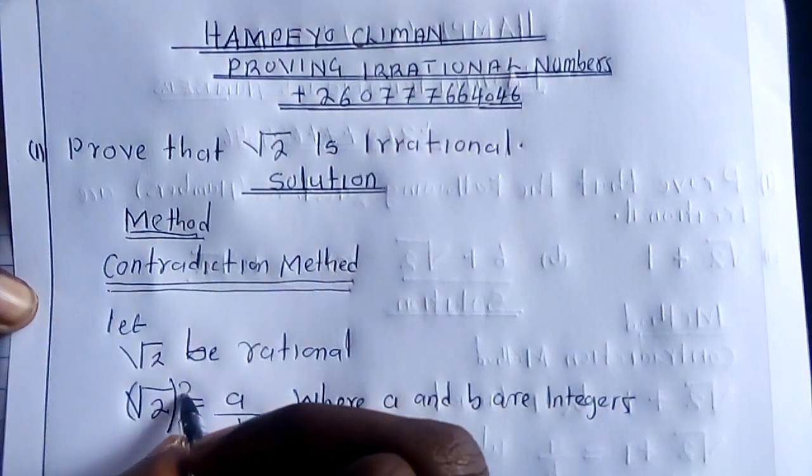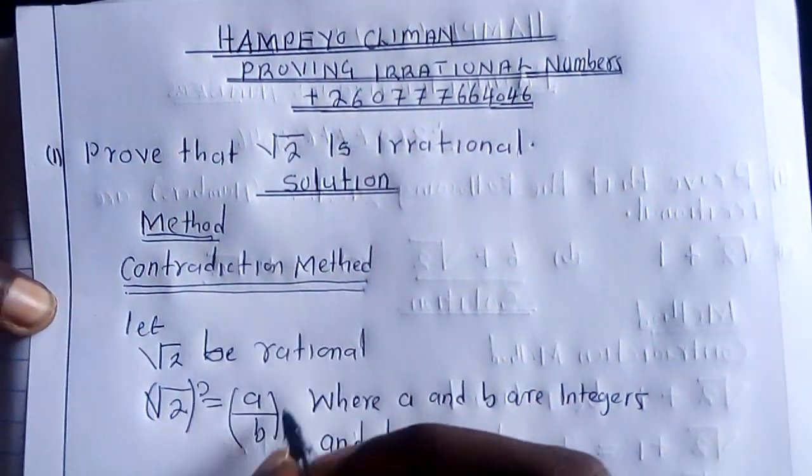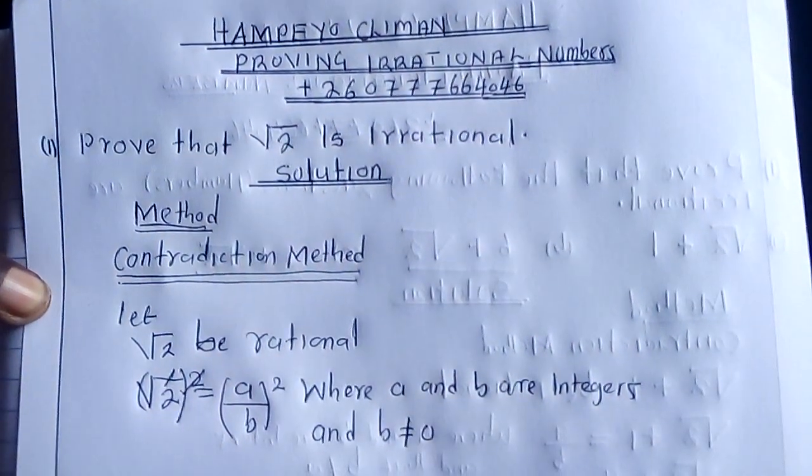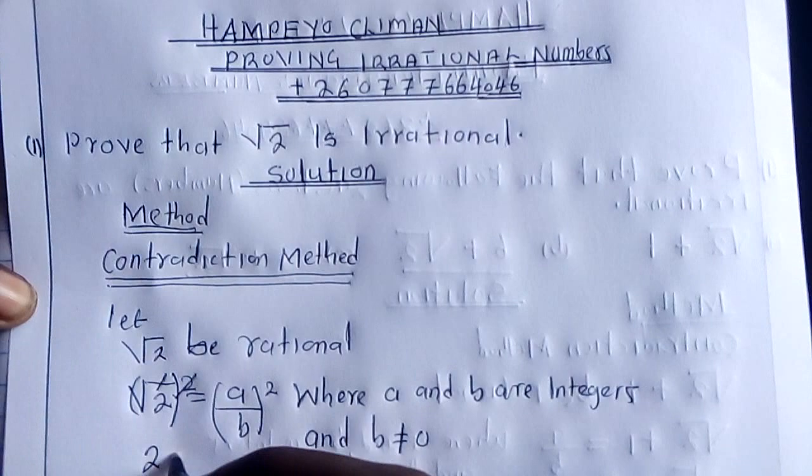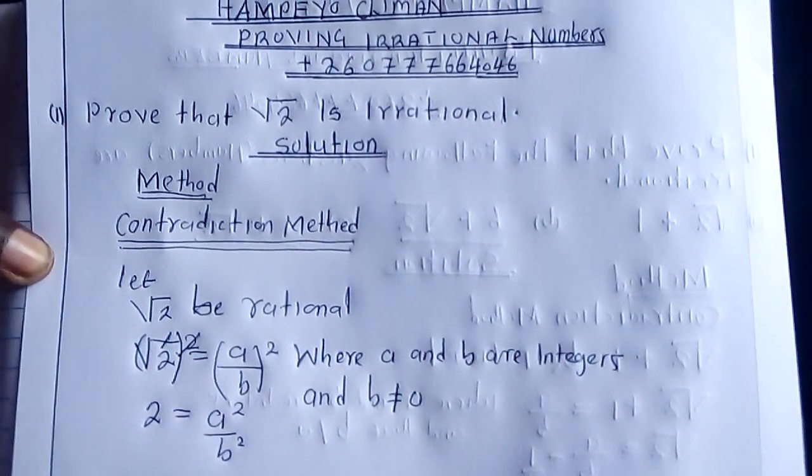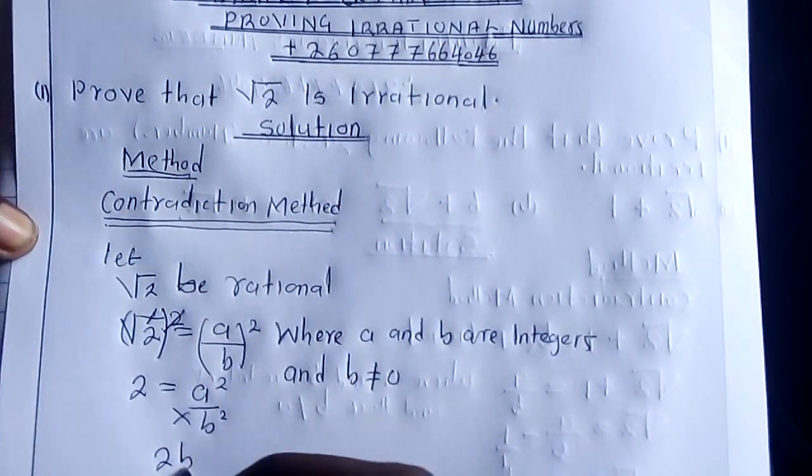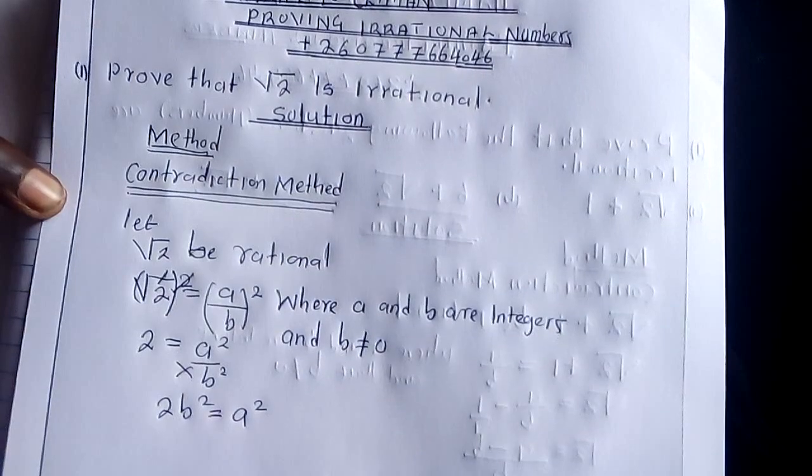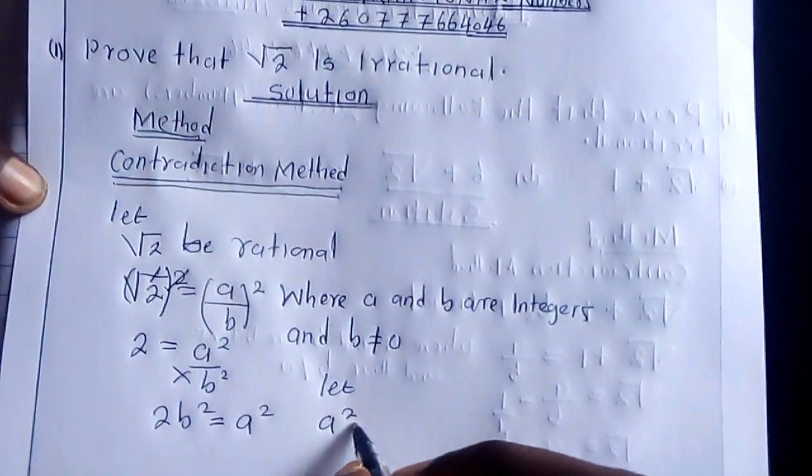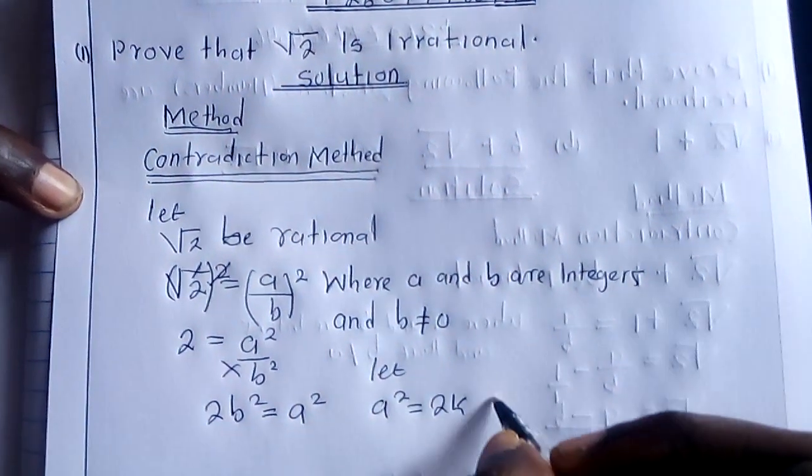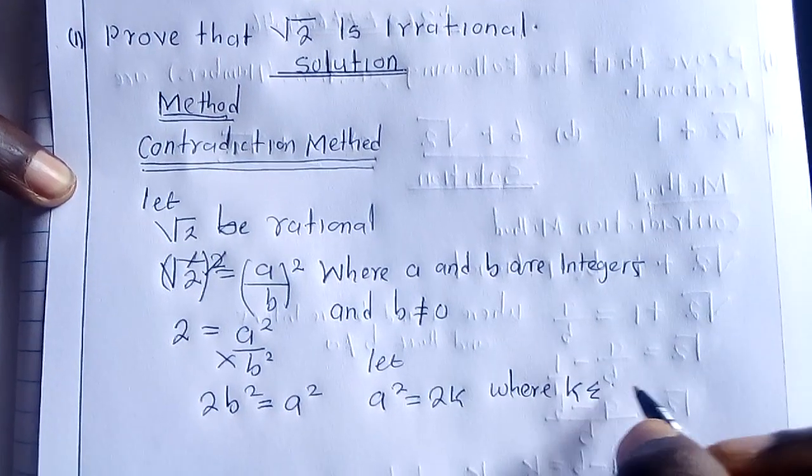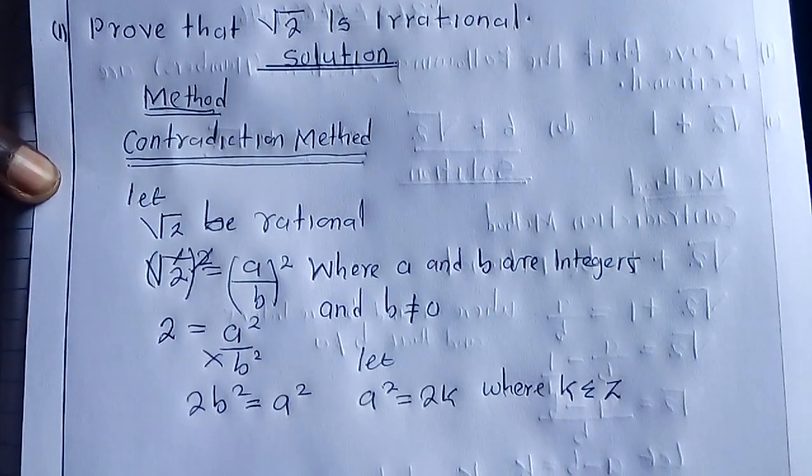Now, we can introduce a 2 to this side and a 2 to this side so that this and this will cancel. We are going to remain with 2 equal to A squared over B squared. Then we are going to multiply, this is going to be 2B squared equal to A squared. Then you can say, let A squared equal to 2K, where K is a member of all values in Z.